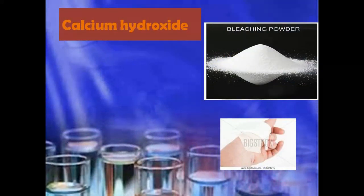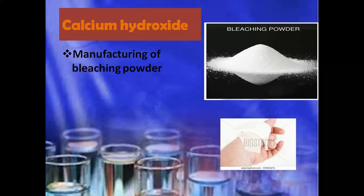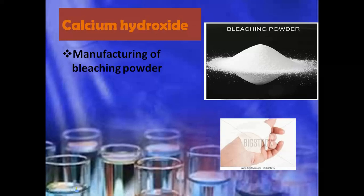The next alkali is calcium hydroxide. Calcium hydroxide is also called slaked lime. The first use of calcium hydroxide is the manufacturing of bleaching powder. Bleaching powder کو ہم daily life میں cloth کا color change کرنے کے لیے use کرتے ہیں۔ یہ ہمارے pale fabric کو whiteish میں convert کر دیتا ہے۔